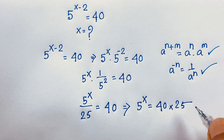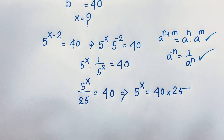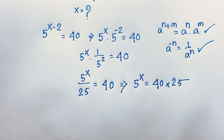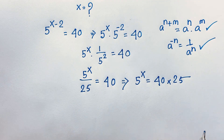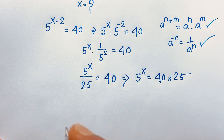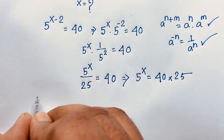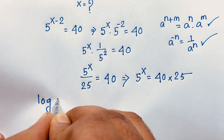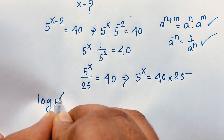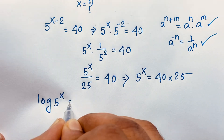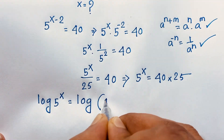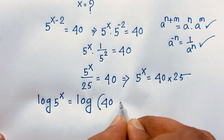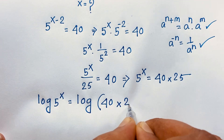Now, if I want to find out the value of x in this exponential math problem, I use both sides natural log. So, log of 5 to the power x is equal to log of 40 times 25.